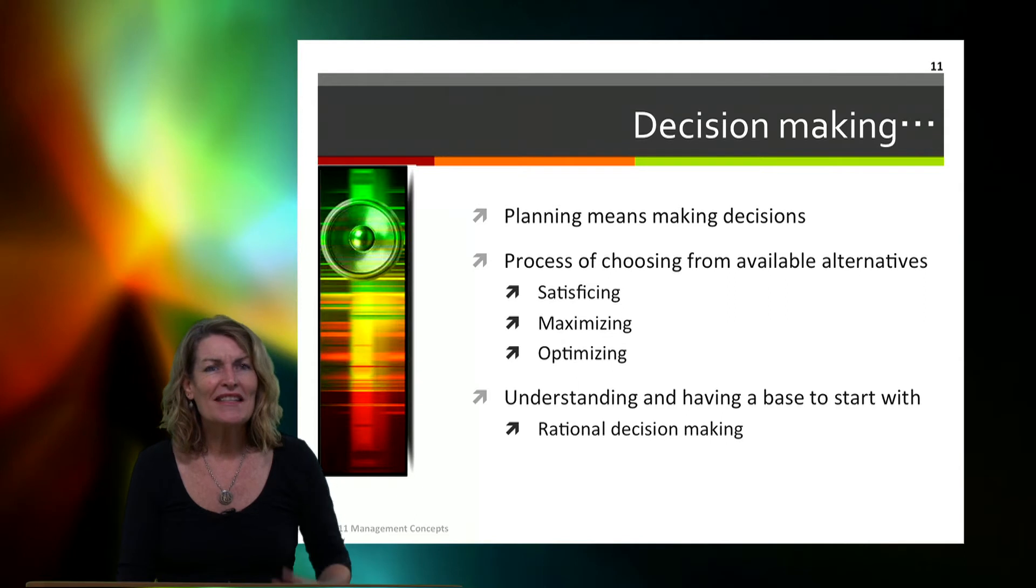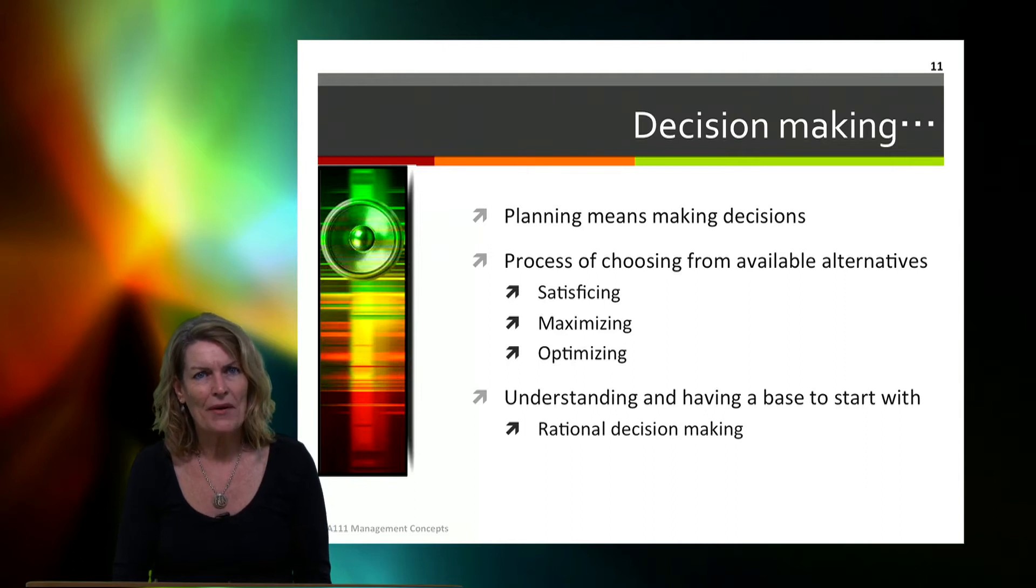So when we look at decision-making and how it feeds into planning, it actually helps us make those plans. Planning means making decisions and processing from the best available alternatives. So when we're in that decision-making mode, satisficing, maximizing, and optimizing are some of the things that we need to think about when we look at the process of choosing from available alternatives in our decision-making.